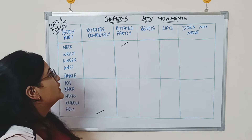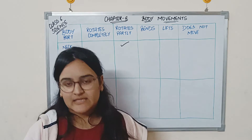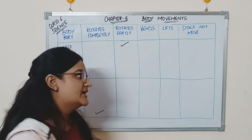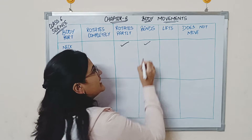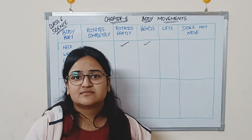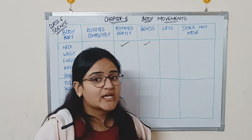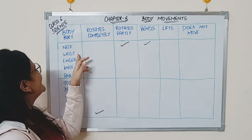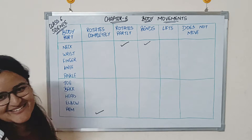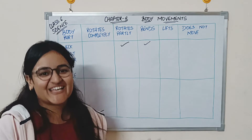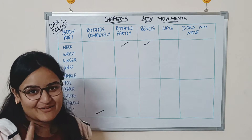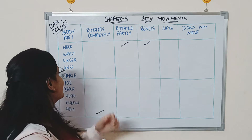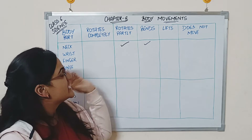Your neck does bend — it bends forward and backward. Can you lift your neck? No, you can't. Next is the wrist. It is moving, it bends, it cannot be lifted, and it does not fall under 'does not move' either.